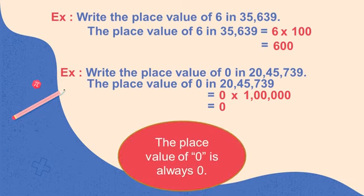Note: the place value of 0 is always 0, because if we multiply 0 with any value of the place, we get 0 only.